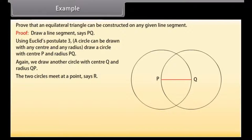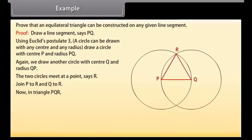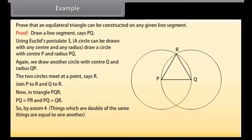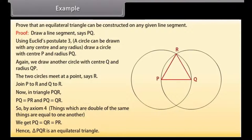The two circles meet at a point, say R. Join P to R and Q to R. Now, in triangle PQR, PQ is equal to PR and PQ is equal to QR. So, by axiom 4, things which are double of the same things are equal to one another, we get PQ equal to QR which is equal to PR. Hence, triangle PQR is an equilateral triangle.